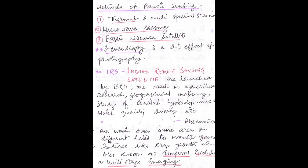Next is IRS. What is IRS? IRS is the Indian Remote Sensing Satellite. These are launched by ISRO and are used for agricultural research, geographical mapping, study of coastal hydrodynamics, water quality survey, etc. In this topic, what is expected in the GATE exam is that you know the different terminologies, the purpose of remote sensing, GIS or GPS, and the different sensors used.